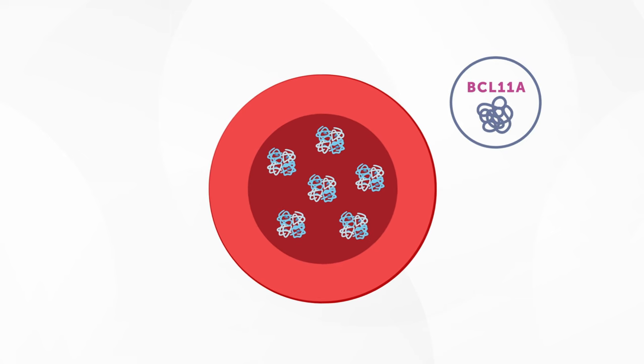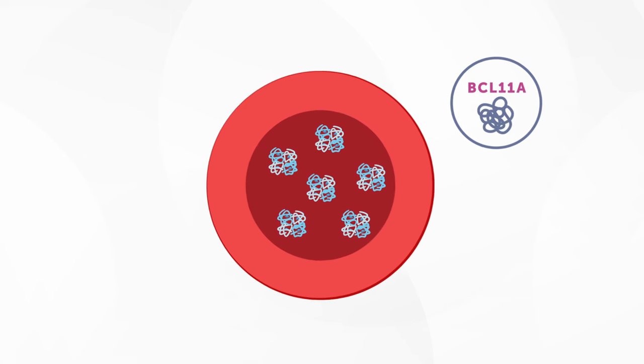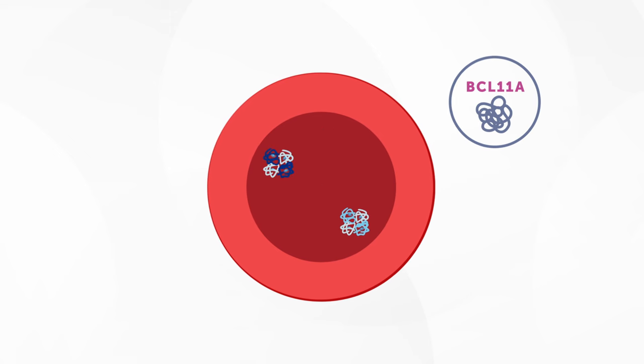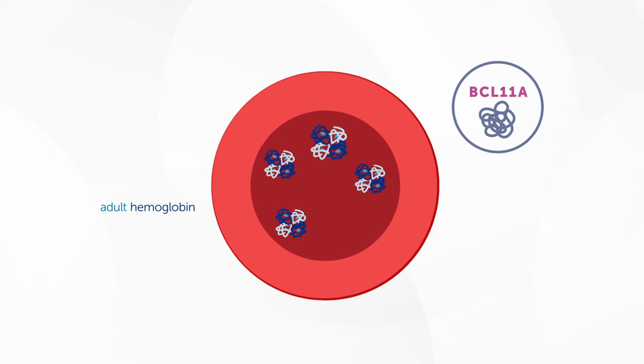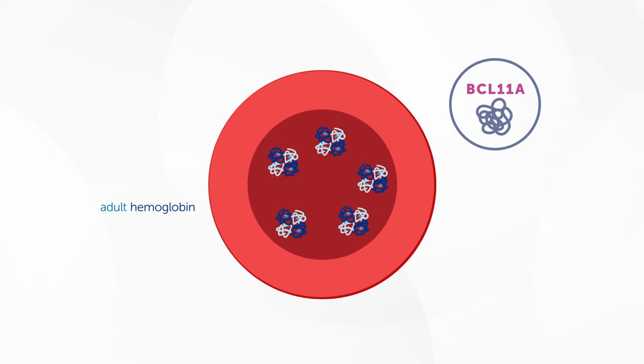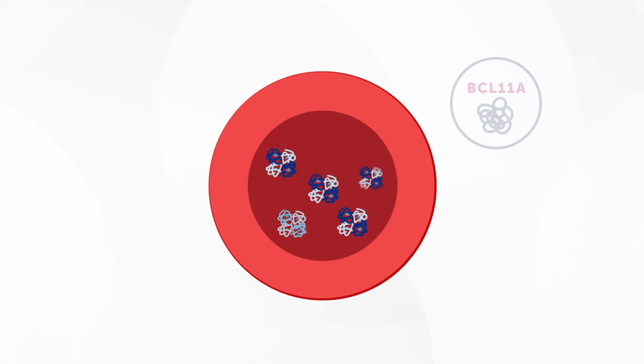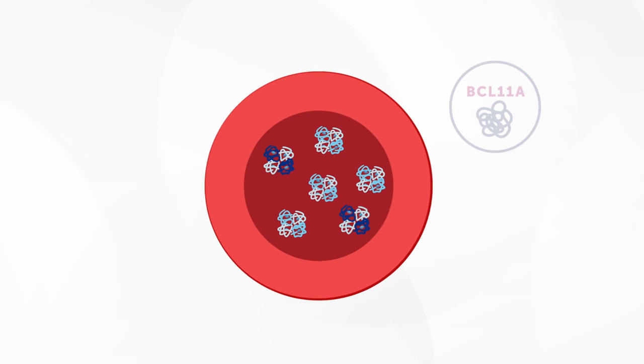When BCL11A is well expressed — which is happening in all of our cells right now, in our bone marrow — it suppresses the production of fetal hemoglobin, and we mostly produce adult hemoglobin. And when it's turned down, we can actually induce more fetal hemoglobin. And that's essentially what the therapies are trying to do: reverse that switch by turning down BCL11A and turning up the fetal hemoglobin molecule.